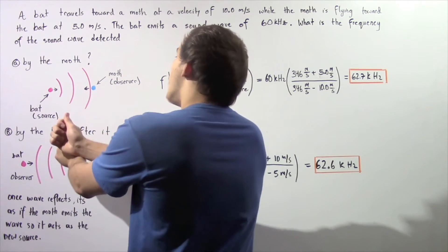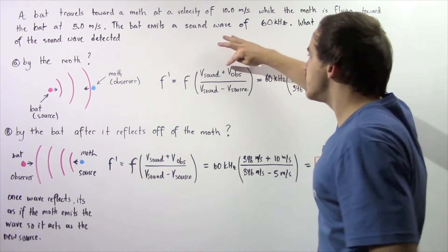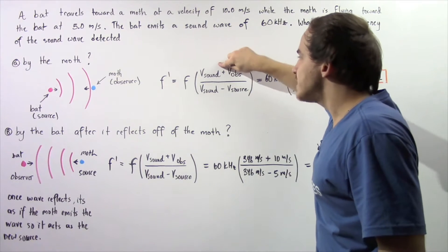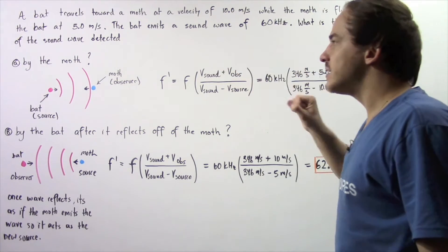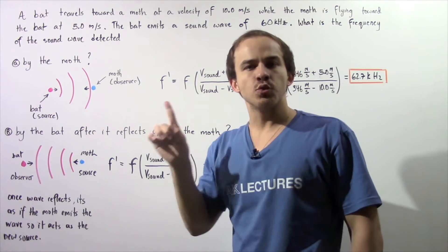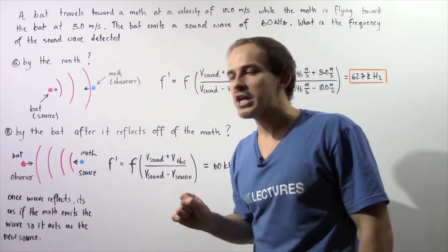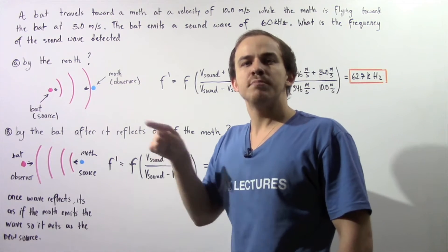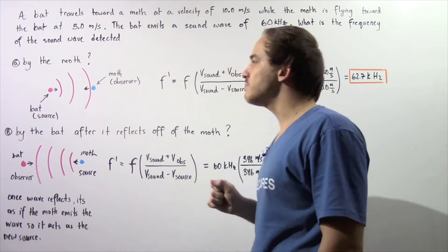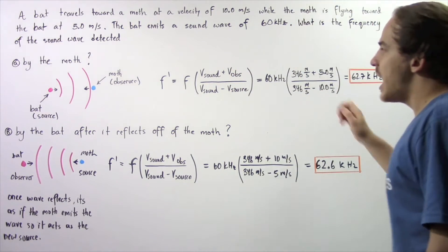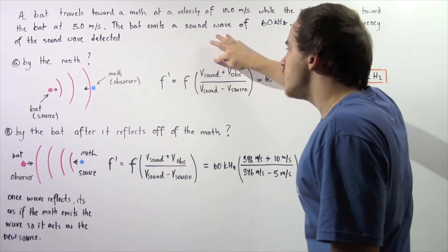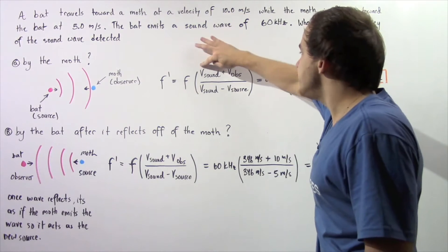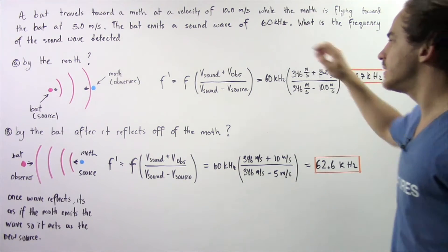If they were traveling away from one another, the signs would be reversed. The velocity of sound — because the temperature of the air is 25 degrees Celsius — is calculated as 331 plus 0.6 times 25 degrees Celsius, giving us a value of 346 meters per second.